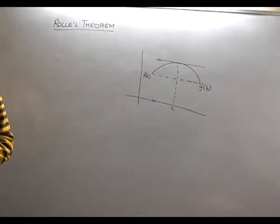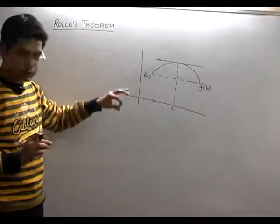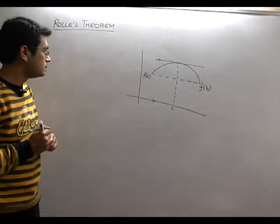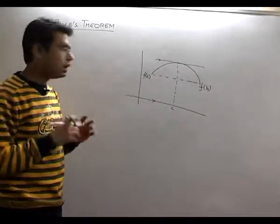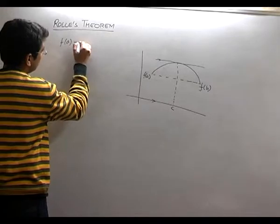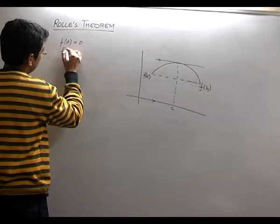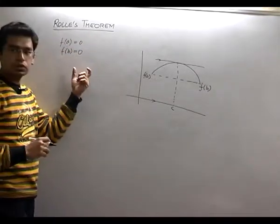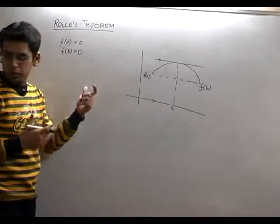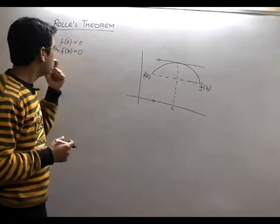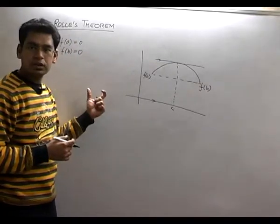Another major interpretation of Rolle's theorem is that between any two roots of a polynomial equation — where f(a) = 0 and f(b) = 0 — between any two roots of a quadratic or any polynomial equation, there lies at least one root of its derivative.